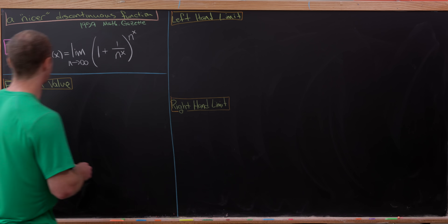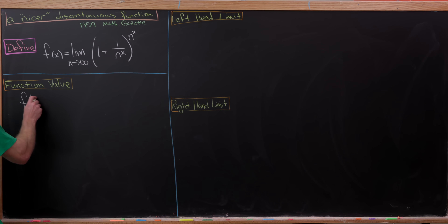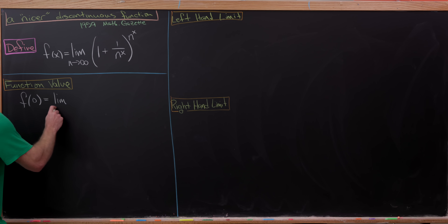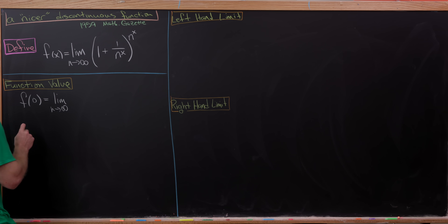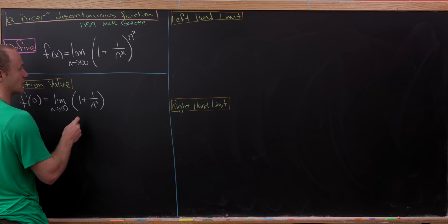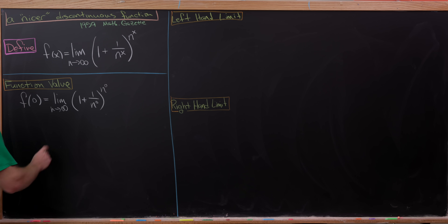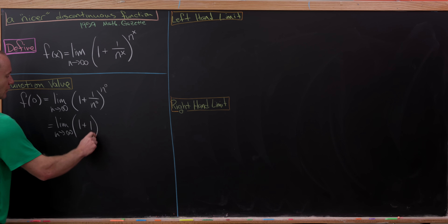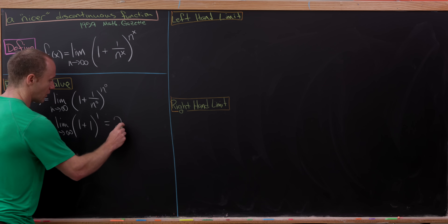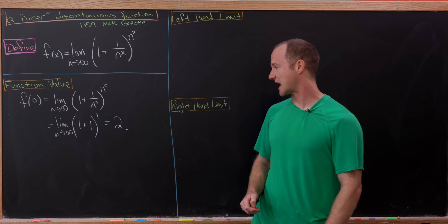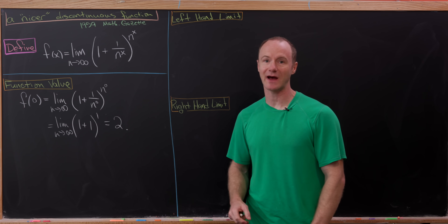Let's start with the function value. That simply means that everywhere we see an x, we plug in 0. So we get the limit as n goes to infinity of 1 plus 1 over n to the 0, raised to the n to the 0 power. Since n to the 0 is always equal to 1, we simply get 1 plus 1 to the 1, which gives us the number 2. So the function has the value of 2 at 0.